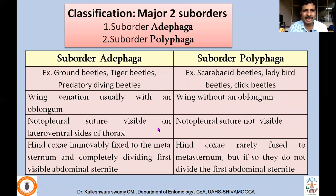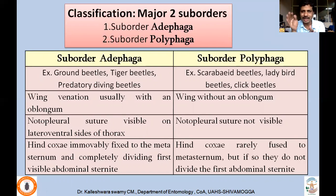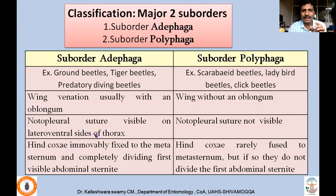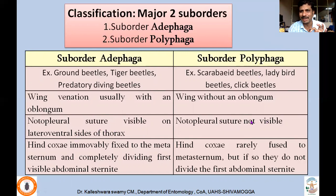Notopleural suture is visible on the lateral ventral side of the thorax in Adephaga. You know notum, tergum, pleuron, and sternum — the notopleural suture on the lateral side forms a clear line in Adephaga, whereas that notopleural suture is not visible in Polyphaga. This is a very easy character to remember because these are comparative characters — if you know the notopleural suture, you can differentiate the two sub-orders.